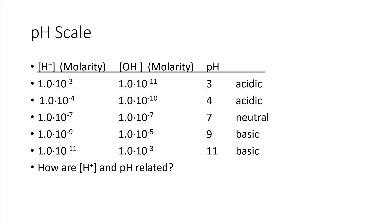In row two, the hydrogen ion concentration is equal to 1.0 × 10⁻⁴, the pH is equal to 4, and the solution is acidic.